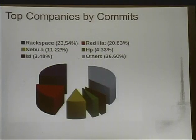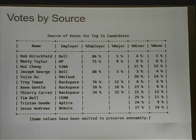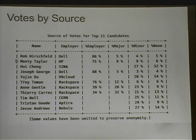Nothing nefarious is going on — most of what's happening is just a noise control problem. If you look at top companies by commits and compare to top companies by foundation membership, they don't line up: Dell drops off the map, while Red Hat, Nebula, and ISI appear. Looking at voting by source, 86% of votes for the Dell candidate came from the same employer, and similar patterns hold for HP and Rackspace. Since those companies maintain a large portion of the voting population, it's potentially an attack avenue for a more nefarious group. This exposed a problem in our voting mechanisms.